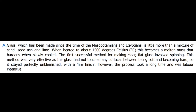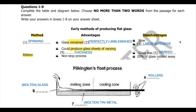In paragraph A, the first successful method for making clear flat glass involved spinning. The answer for the first method is spinning. The advantage given to the glass from this spinning method is that it remained perfectly unblemished.